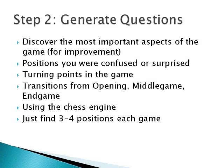The next step is to generate questions — this is where the 80-20 rule comes in. You want to find the critical positions that give you the most bang for your buck. For most of us who have other responsibilities, we want to find maybe three or four critical positions in the game to analyze. This includes positions where you were confused or surprised, and turning points during the game — where you thought you were winning and suddenly you were losing, or you were even and suddenly you were winning.